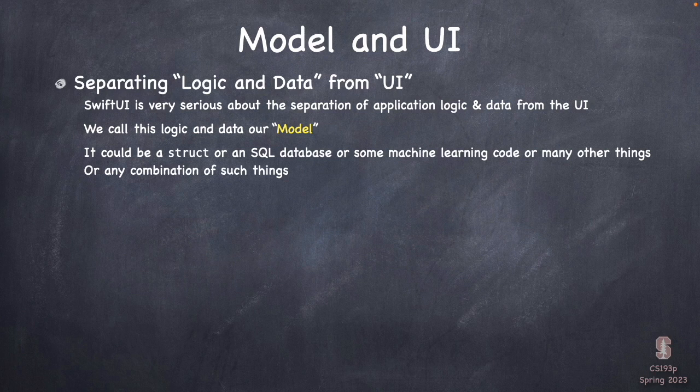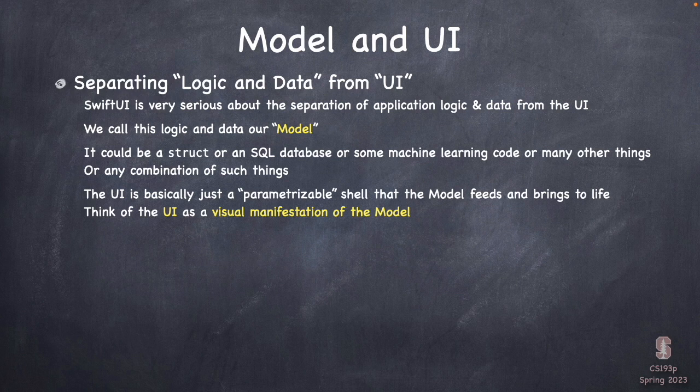You're going to hear me use the word 'model' hundreds of times. All that stuff lives in the model. We call the stuff we've been doing so far in the class the UI — or sometimes the view, because it's our view, our portal onto the model. The model could be a single struct, a whole SQL database, machine learning code, or a REST API. It's conceptual. With our Memorize app it's going to be a single struct, but models can be way more powerful.